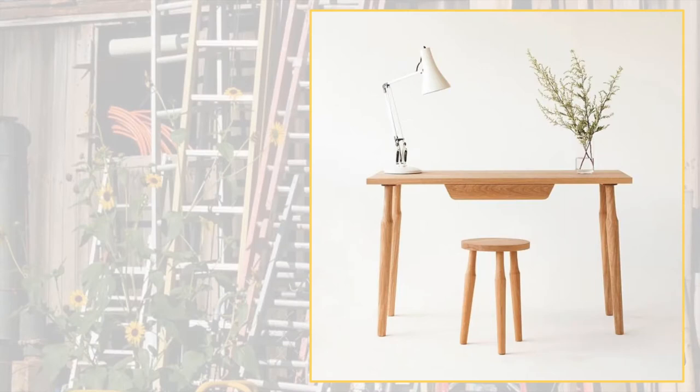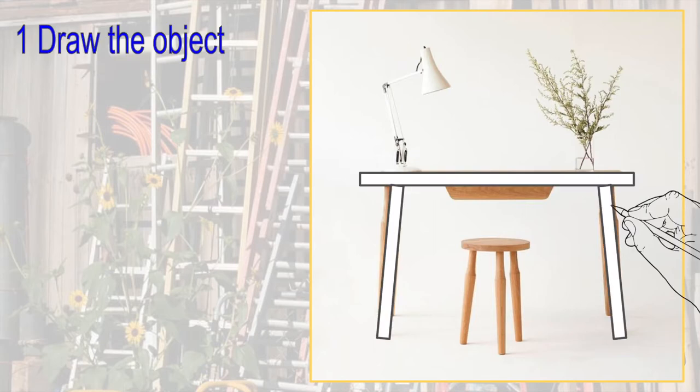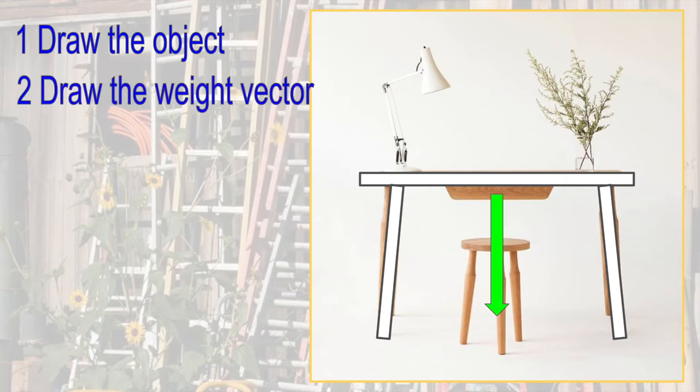Here is a table. To examine the forces it experiences we draw a free body diagram. There are five stages to drawing the diagram, which will show all the forces acting on the table. First, we draw the object simply. Now we are going to identify all forces acting on the table.